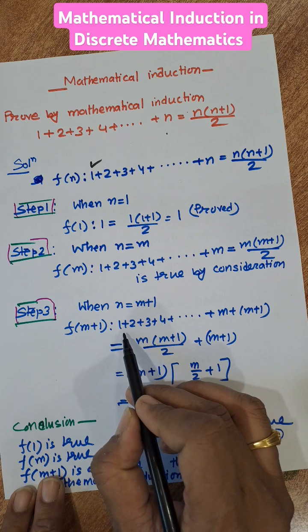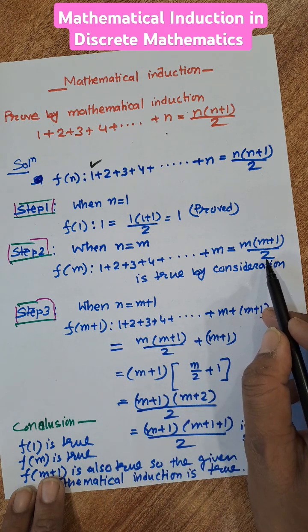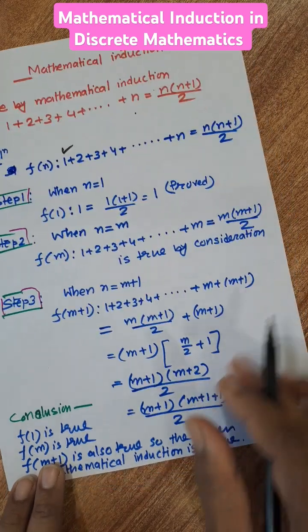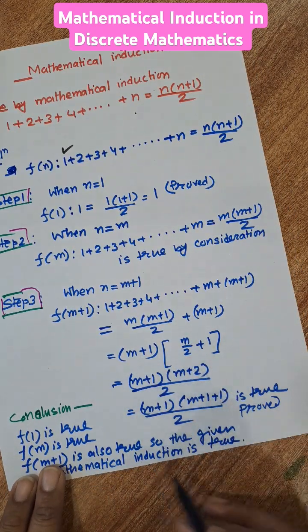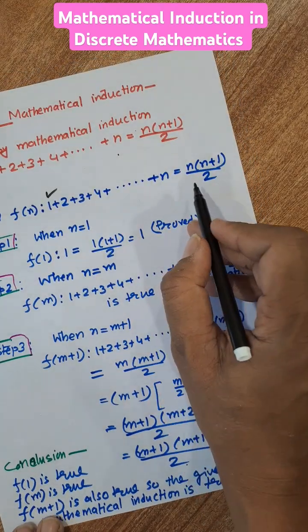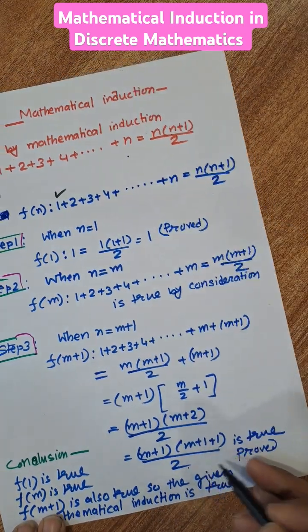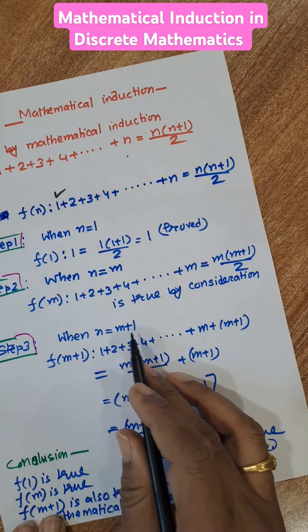We know already that 1 plus 2 plus 3 plus dot dot m equal to m into m plus 1 by 2 from step 2. Put the value here and taking common m plus 1, then it will be m plus 1 into m plus 2 by 2. When we put the value of m plus 1 here in the main equation, then we will get this equation. So it is true for n equal to m plus 1.